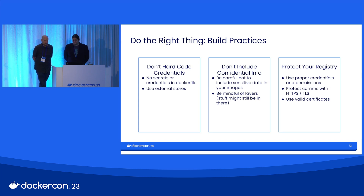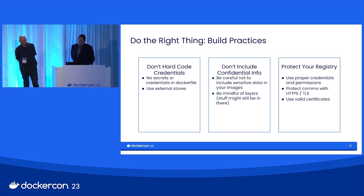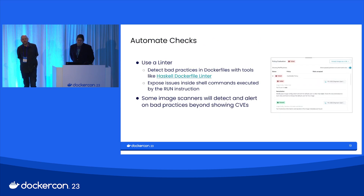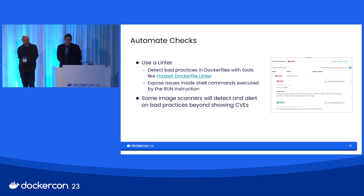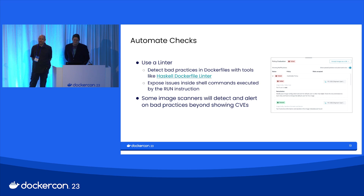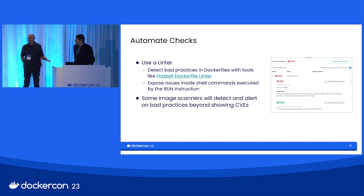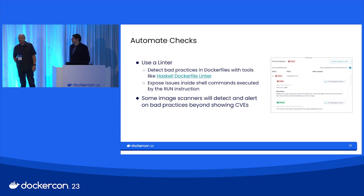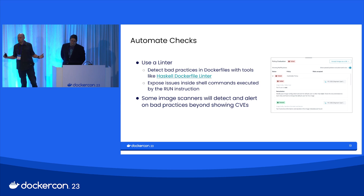That's a little bit about the key things to think about in terms of build. There's also the ability to automate the checking of some of these things. Just in case we forget, can we put something in place — like a linter — that will warn us if we've not done the right things? There's something called the Haskell Dockerfile linter, which can expose some of those issues to you and remind you before you get too far. Some image scanners will also provide those insights, like Sysdig does — you can actually block something from proceeding through a pipeline by having that level of visibility.